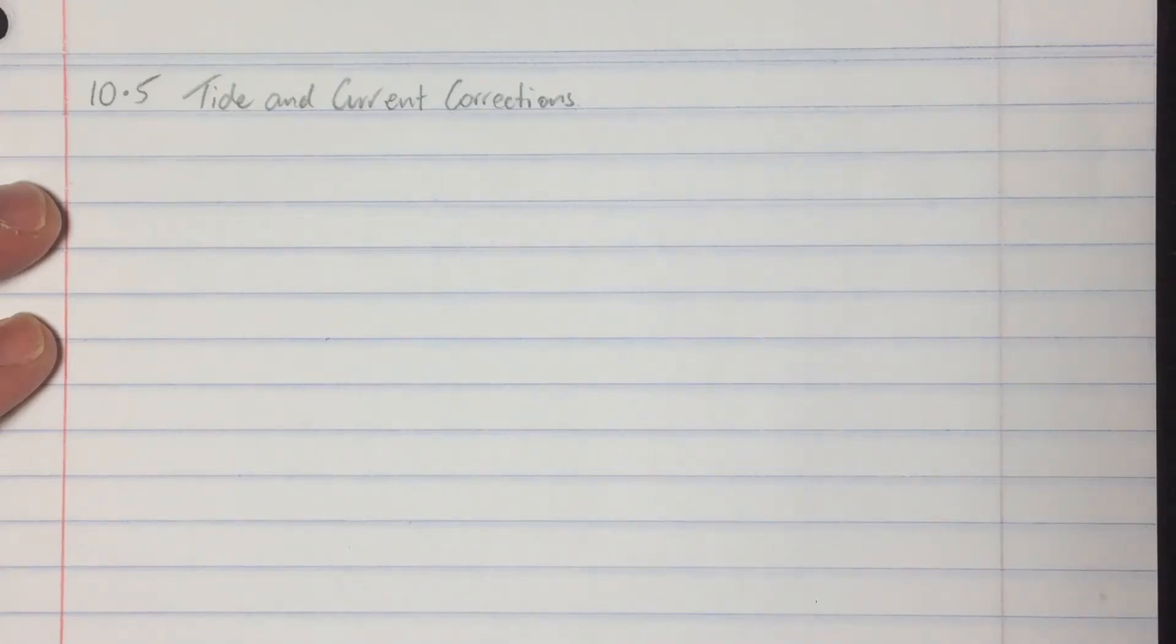In this video we're going to be looking at corrections for current. The speed and direction in which a boat travels are not due only to the motor or from the sails, they're also affected by the movement of currents. The speed of a boat as it would be measured in still water is called the speed through the water. The true course and direction of a boat are called the speed and course made good.